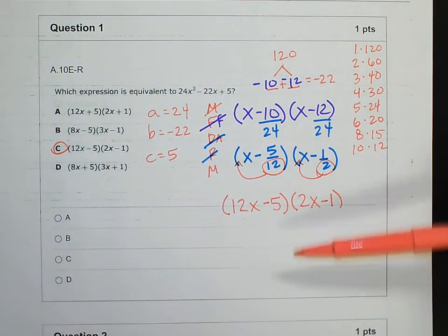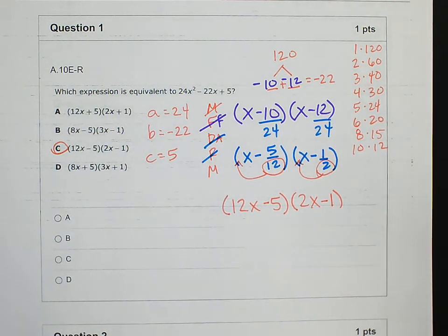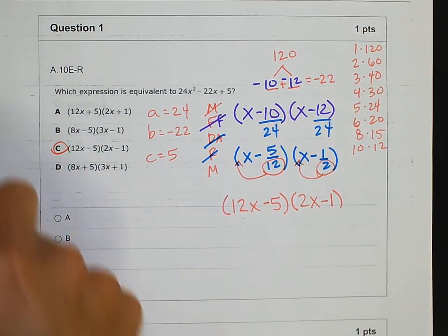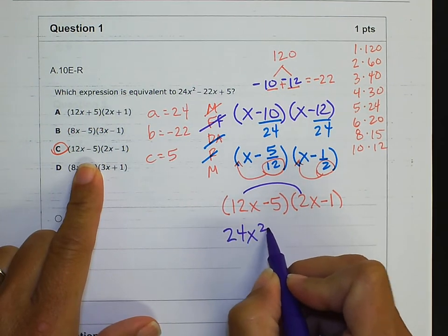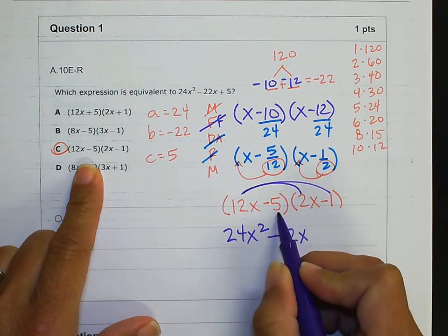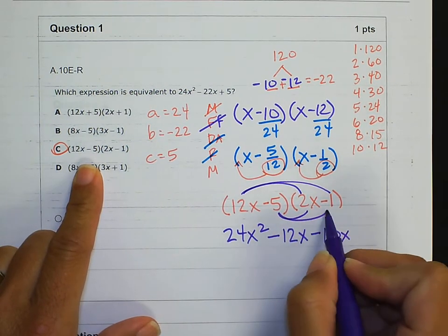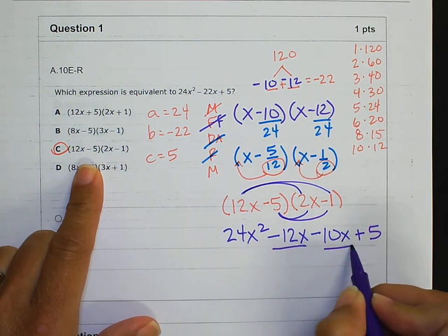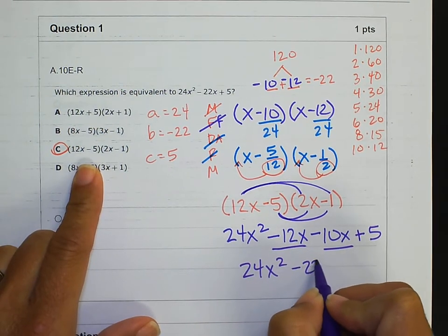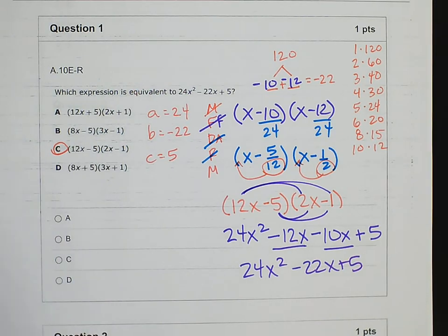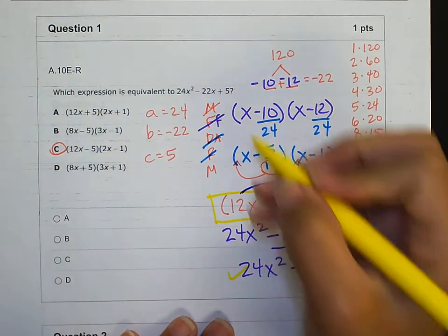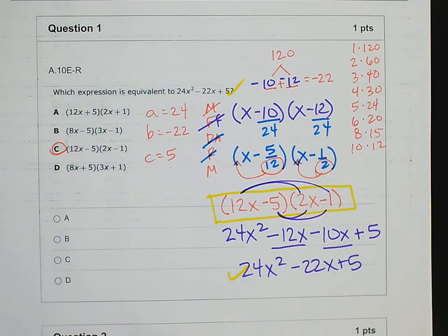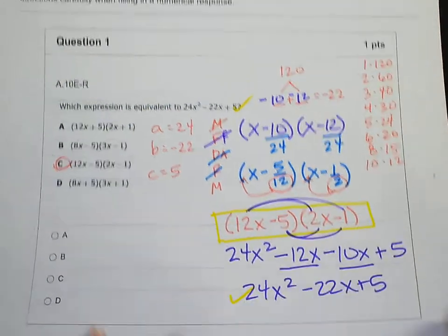Move the denominators in front of the variables: move 12 there and 2 there. That gives me (12x minus 5)(2x minus 1), so C was the correct answer. If you got stuck, remember you can work backwards with multiple choice problems. You could check answer C by FOIL: 12x times 2x is 24x², 12x times negative 1 is negative 12x, negative 5 times 2x is negative 10x, and negative 5 times negative 1 is positive 5. Negative 12 and negative 10 gives negative 22 — matching the original. Check your work; it's a good way to verify.